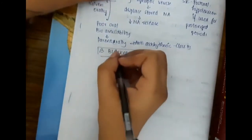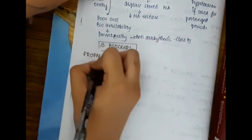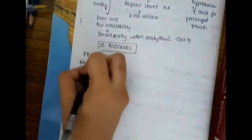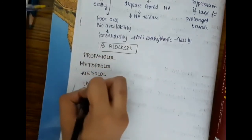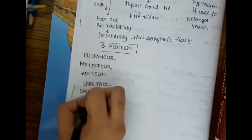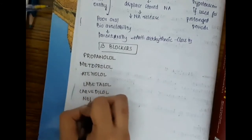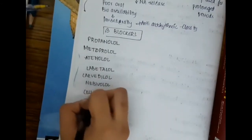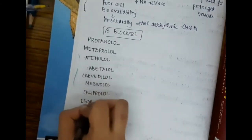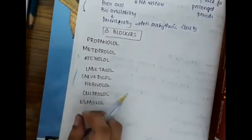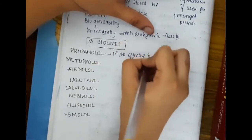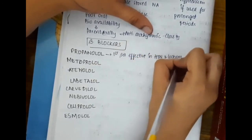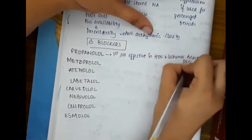The next important group of drugs are beta blockers. These include propranolol, metoprolol, atenolol, labetalol, carvedilol, nebivolol, celiprolol, and esmolol. Propranolol is the first beta blocker, effective in hypertension and ischemic heart disease. It is a beta-1 plus beta-2 blocker.